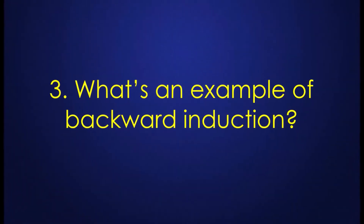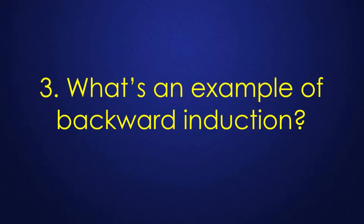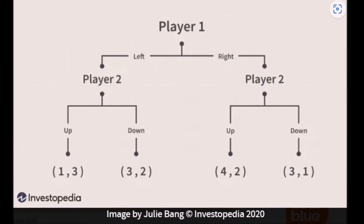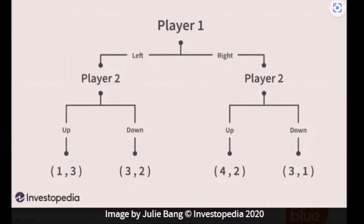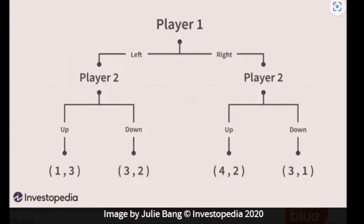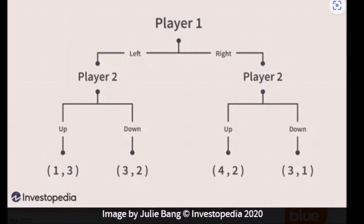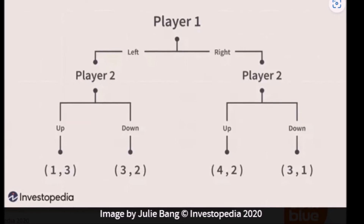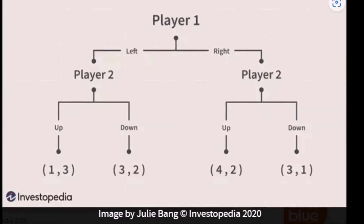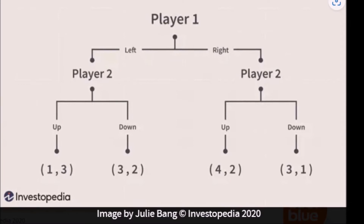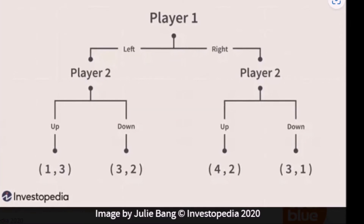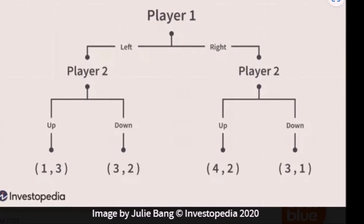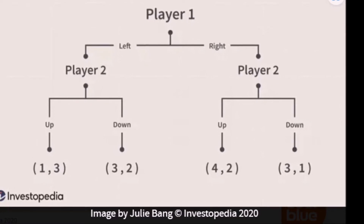What's an example of backward induction? Here you see a simple sequential game between two players. The labels with player 1 and player 2 within them are the information sets for players 1 or 2, respectively. The numbers in the parenthesis at the bottom of the tree are the payoffs at each respective point. So that's the first thing we want to take a look at — what's the payoff?